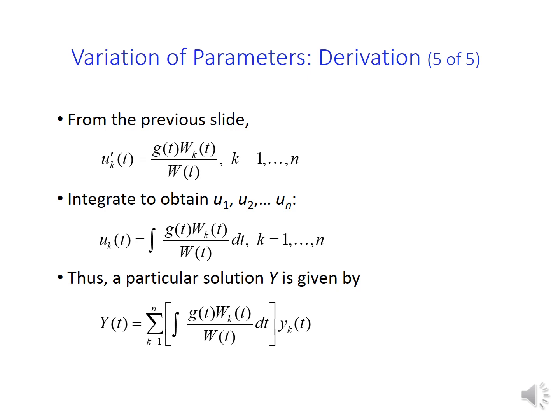And to figure out uks we simply integrate uk primes. Therefore a particular solution capital Y, which is the sum of the product of yks with uks, is given by the formula here.